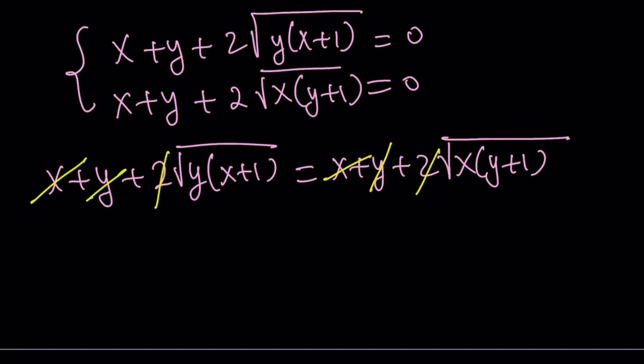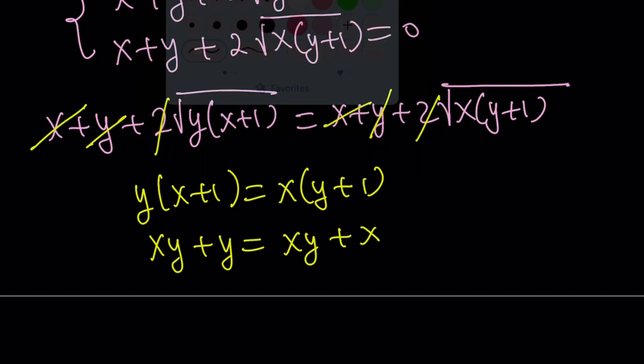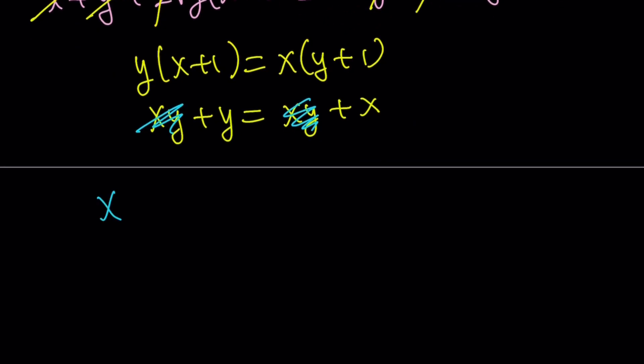You can square both sides and get the following key. So y times x plus 1 equals x times y plus 1. Now, what is that supposed to mean? That kind of looks weird if you don't distribute. Let's go ahead and distribute and simplify. We get xy plus y equals xy plus x. And this is amazing, because we get x equals y from here. xy cancels out, and we end up with x equals y, which is awesome.